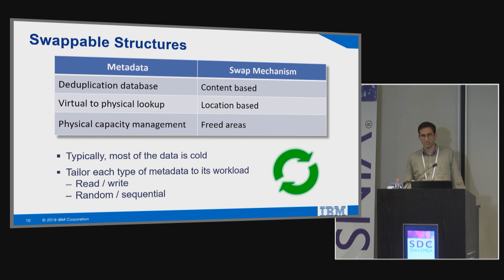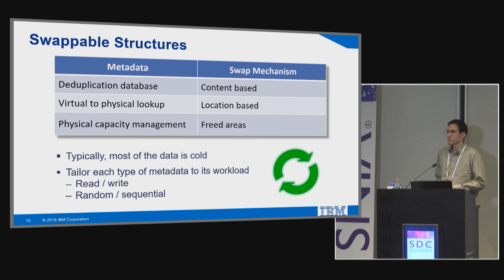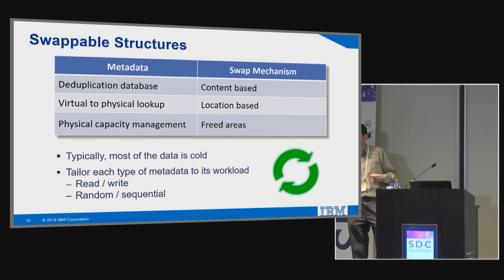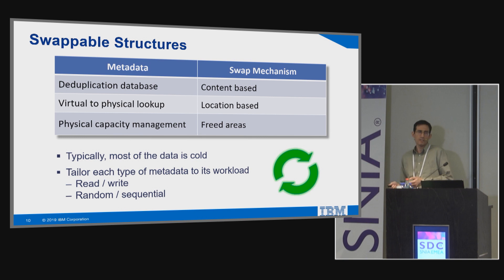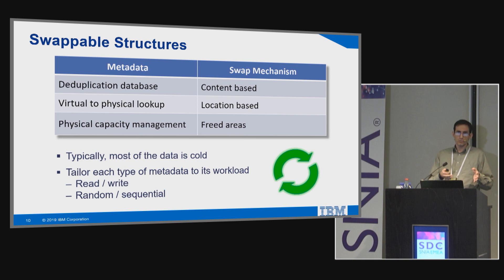For virtual-to-physical lookup, swapping is based on a different parameter: location, meaning the position within your volume. If I have a volume that's hot and another that hasn't been used for a while, I want to prefer having metadata for the hot volume in RAM, whereas for the cold volume, I could have that swapped out to disk. The granularity doesn't have to be a volume — it could be finer — but it's a convenient example.